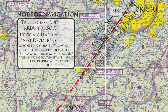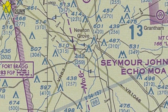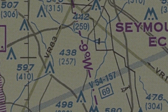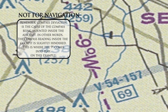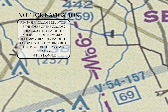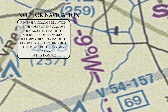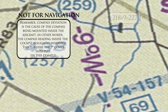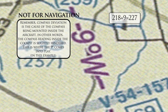Now we need to find our magnetic course. To do this, we have to either add or subtract any deviations — otherwise known as isogonic lines — from our course. As you can see here, we have a western magnetic deviation of 9 degrees west. Since west is best, we add 9 degrees to our true course, which gives us a magnetic course of 227 degrees. It's that simple.